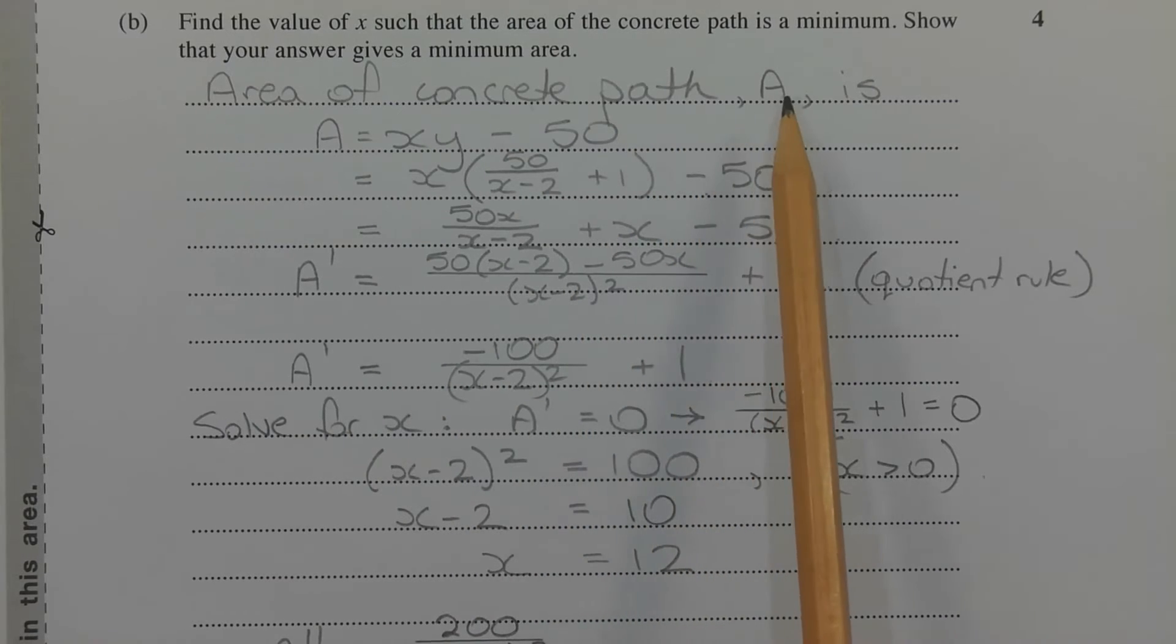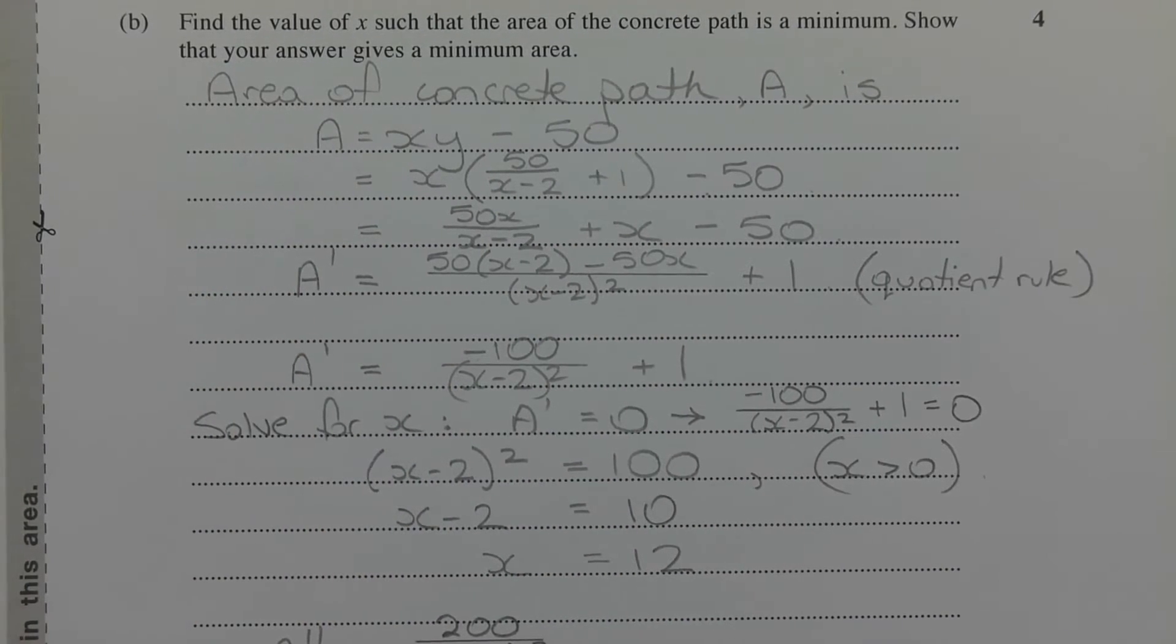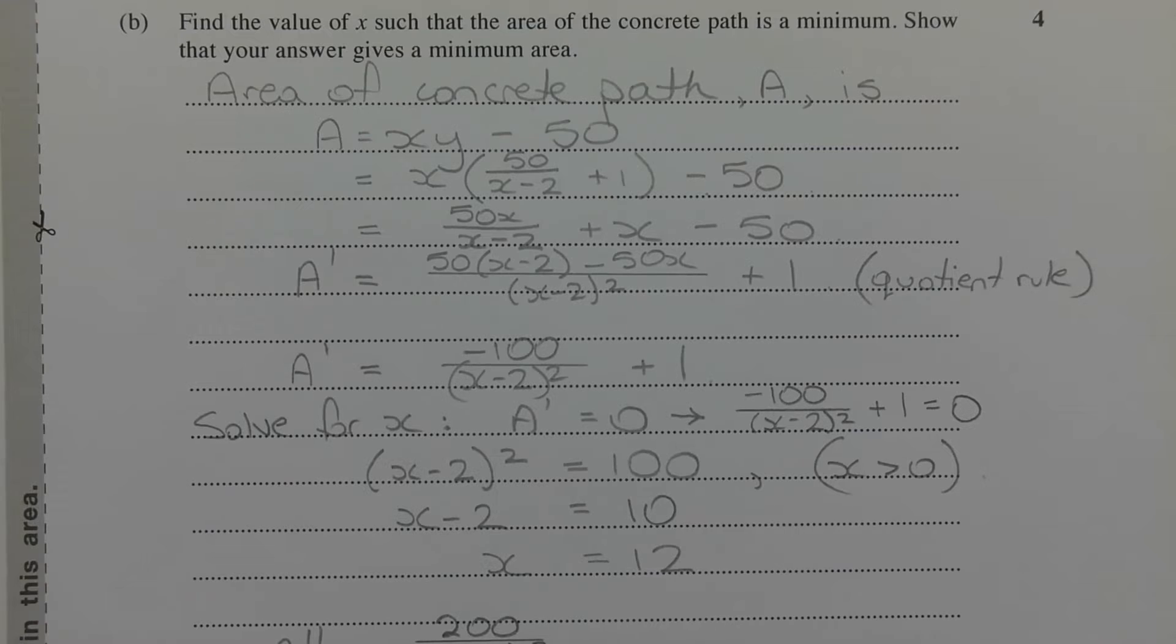The area of the concrete path A is the difference between the area of the large rectangle, which is x times y, and the area of the garden, which is 50 square meters. Hence A is equal to xy minus 50. But we want A expressed in terms of the variable x only, not in terms of x and y. So we need to eliminate the y variable somehow. And the reason for that is we want to find the first derivative later on. That'll be our next step. And having two different variables complicates things. We just want A in terms of x because we want the first derivative with respect to x.